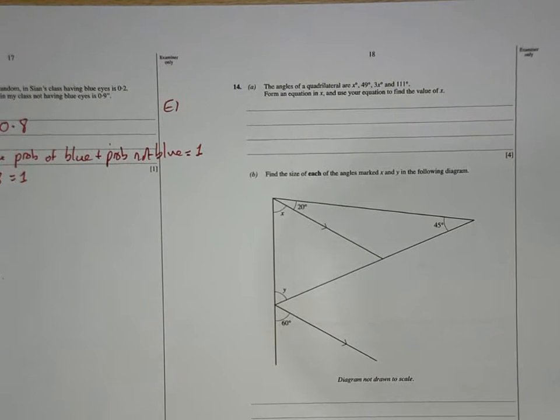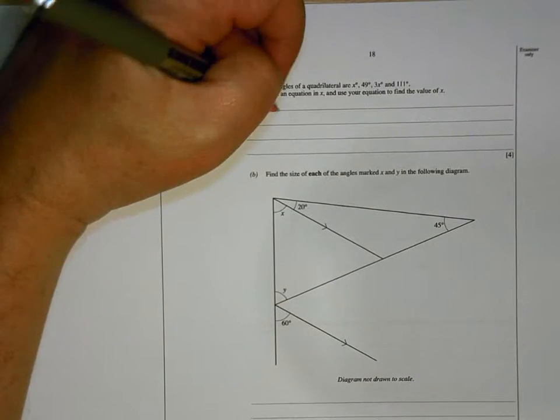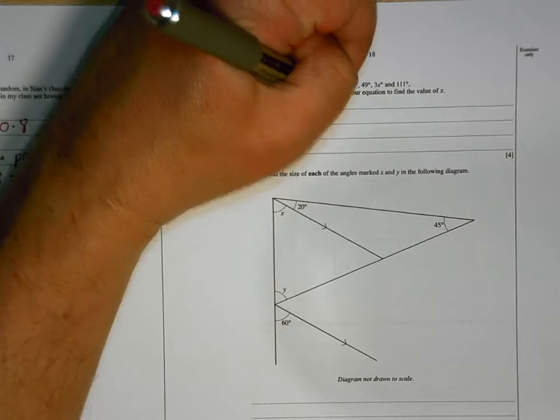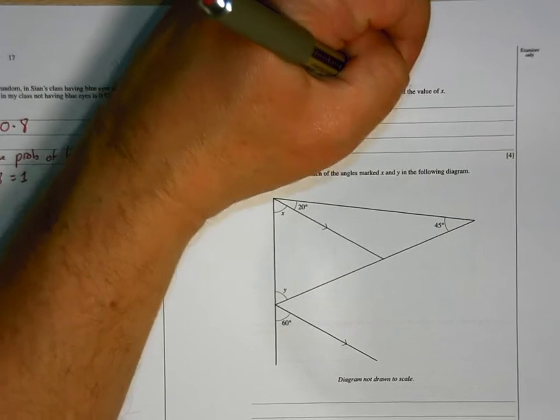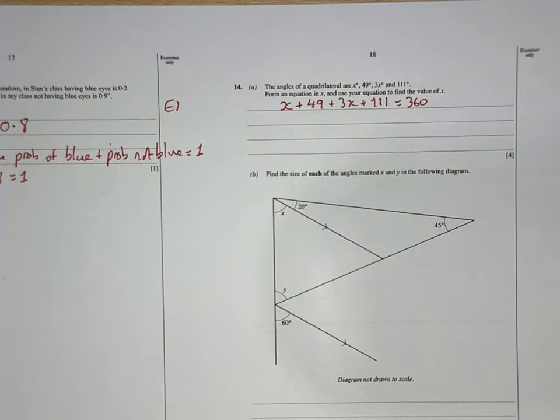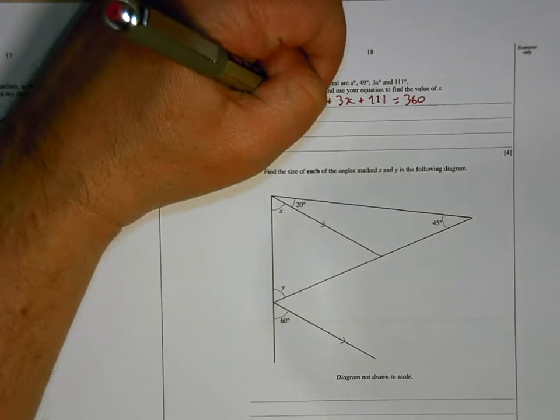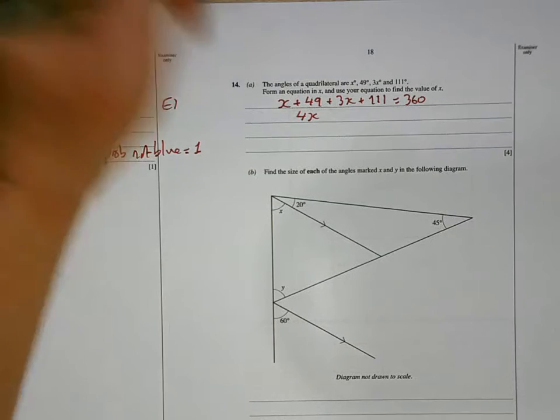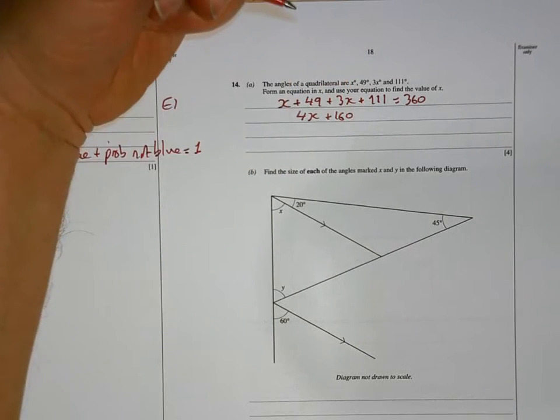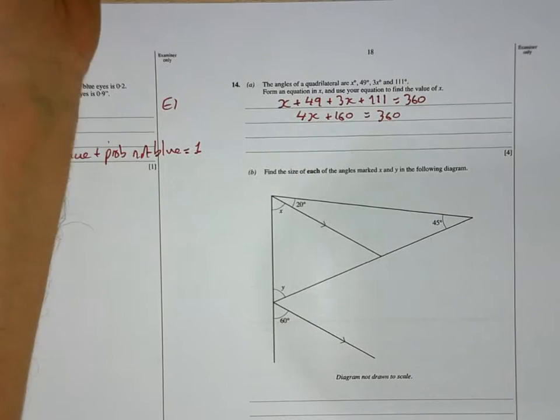Question 14. The angles of a quadrilateral are x degrees, 49 degrees, 3x degrees and 111 degrees. Form an equation in x and use your equation to find the value of x. So the fact you need to know about the angles of a quadrilateral is that they have to add up to 360. So we're going to do x plus 49 plus 3x plus 111 must equal 360. One mark for that. We can tidy that up because 1x and 3x make 4x. 49 and 111 add up to 160. So we've simplified our equation.